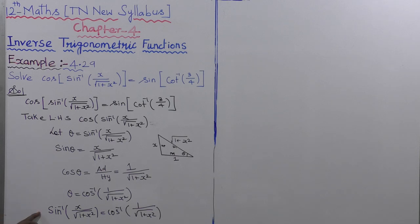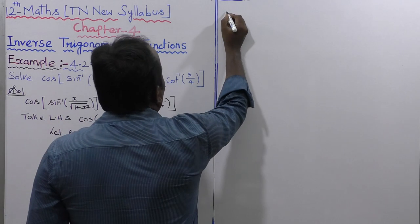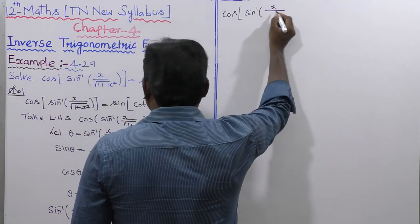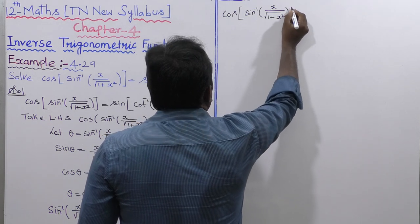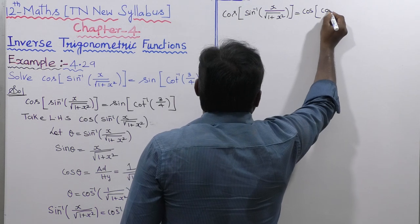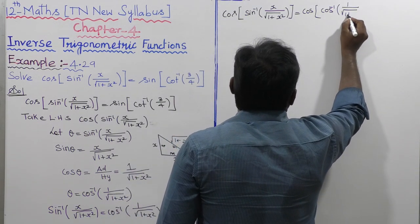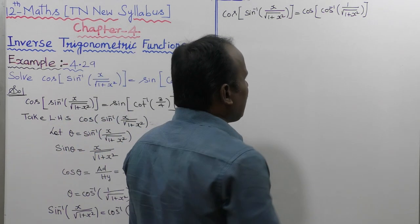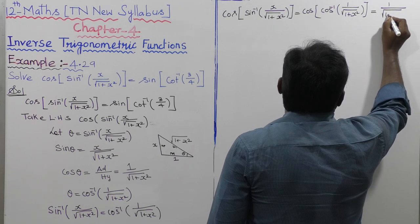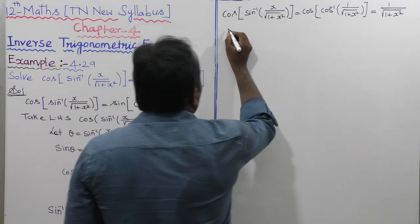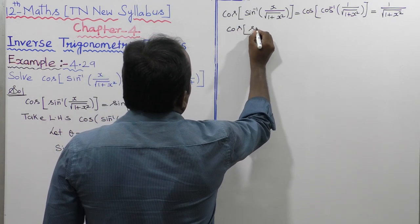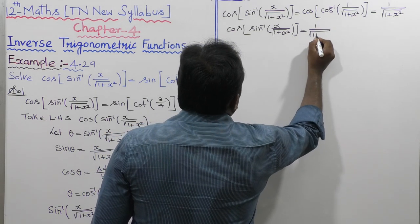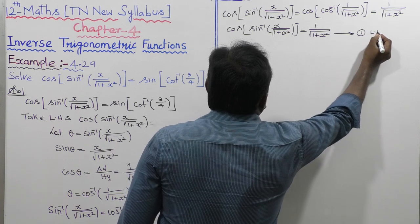Taking cos on both sides: cos of sin inverse of x by root of 1 plus x square is equal to cos of cos inverse of 1 divided by root of 1 plus x square. Using the identity cos of cos inverse of theta equals theta, this simplifies to 1 divided by root of 1 plus x square. This is Equation 1 — the LHS.